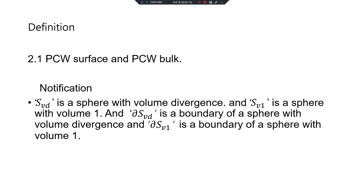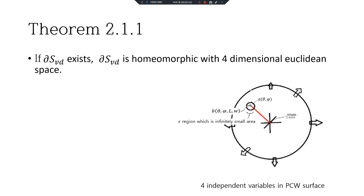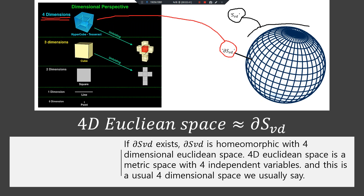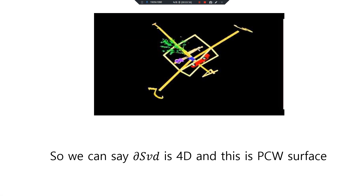Definition: PC double the surface and PC double the bulk. S3D is a sphere with volume divergence and S3D1 is a sphere with volume 1. DS3D is a boundary of a sphere with volume divergence and DS3D1 is a boundary of a sphere with volume 1. If DS3D exists, DS3D is homeomorphic with 4-dimensional Euclidean space. 4-D Euclidean space is a matrix space with 4 independent variables, which is the usual 4-dimensional space. So we can say DS3D is 4-dimensional, and this is PC double surface.